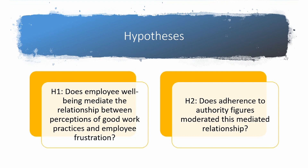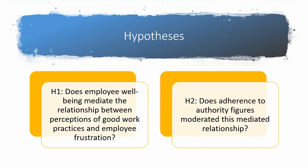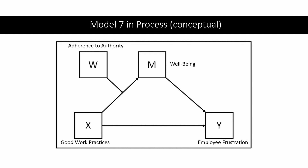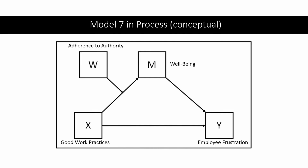In our example today we're going to be testing two hypotheses. We're going to be looking at a dataset of around 1,000 employees in an employee survey with four main variables. Our independent variable is good work practices, and we want to see if that influences employee frustration as a negative effect. We think this relationship is going to be mediated by employee perceptions of well-being, and this mediation effect is going to be moderated by adherence or respect for authority. Hypothesis one: does employee well-being mediate the relationship between perceptions of good work practices and employee frustrations? Hypothesis two: does adherence to authority figures moderate this mediated relationship, represented by W?